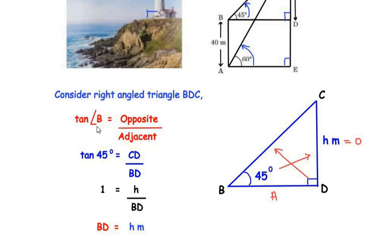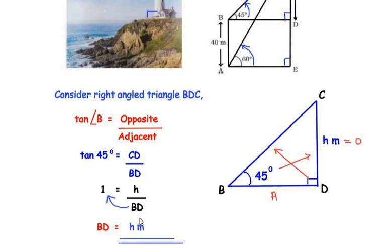The trigonometric ratio using the opposite and adjacent sides is tangent. So tan of angle B equals opposite over adjacent. Angle B is 45 degrees, so tan(45°) = CD/BD. tan 45° is a standard angle equal to 1. So 1 = h/BD, which gives us BD = h meters. The distance of point B from D is h meters.